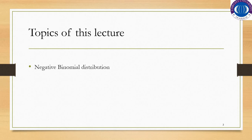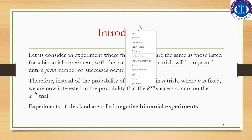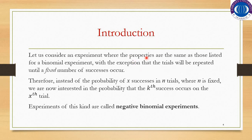The topic of this lecture is negative binomial distribution. Let us consider an experiment where the properties are the same as those listed for a binomial experiment. The properties of the binomial experiment are: the experiment has two possible outcomes classified as success and failure, it is repeated a fixed number of times, each successive trial is independent, and the probability of success remains constant from trial to trial.